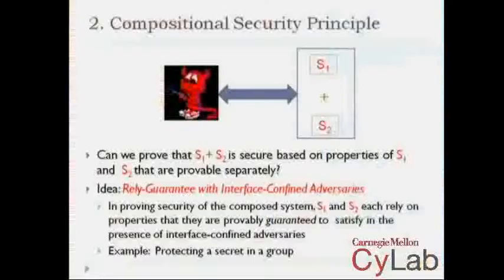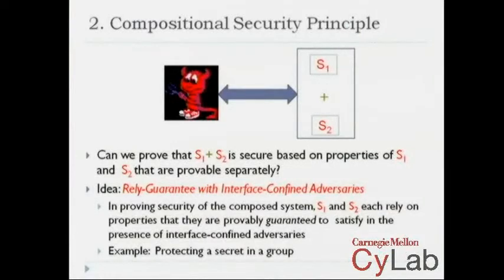To make things more concrete, assume there is some predicate like 'safe network' that is true if the secret is only known to the three people who should know the secret. Under the assumption that 'safe network' is preserved, if we locally only perform actions like sending out the secret encrypted with keys that are only known to the three of us, then under this assumption each of us will act in a way that continues to preserve this secret. That is what I mean when I say S1 and S2 each rely on properties from each other that can be provably guaranteed even in the presence of adversaries confined to certain interfaces.